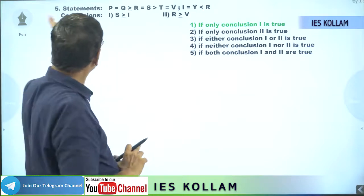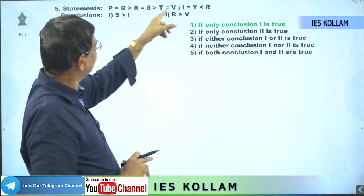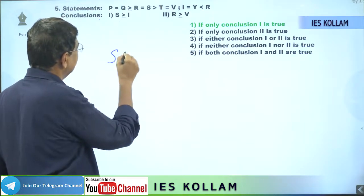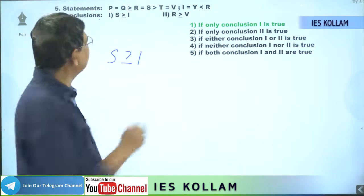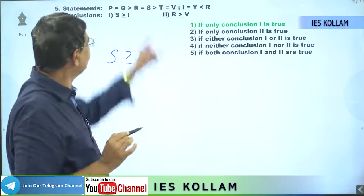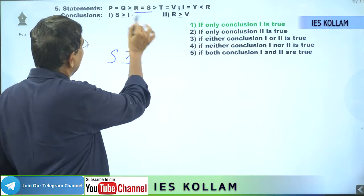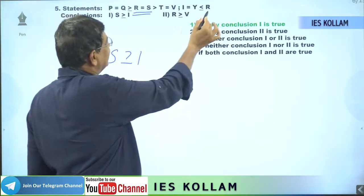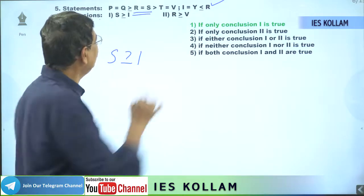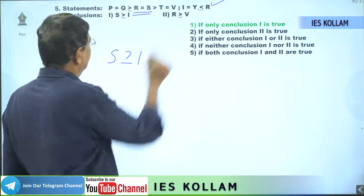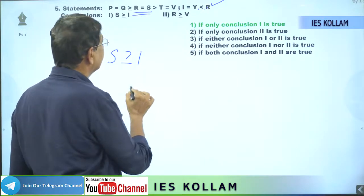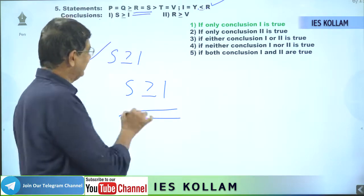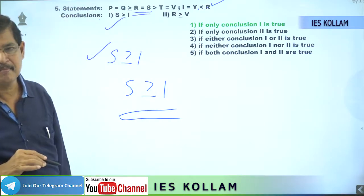We can take the next problem. Here the statements are already given. The first statement has I; the second statement: I is equal to Y less than or equal to R. We have to check whether the first conclusion, S greater than or equal to I, is valid. The statement has R equal to something. We have to connect S and I. S is only in one place — we can connect S or R.